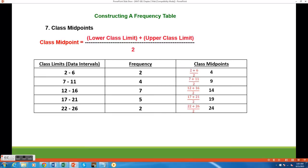For the second class, I would do similar. I take the lower limit 7 plus the upper limit 11 and then divide by 2 to get 9. I continue this process for all five classes.